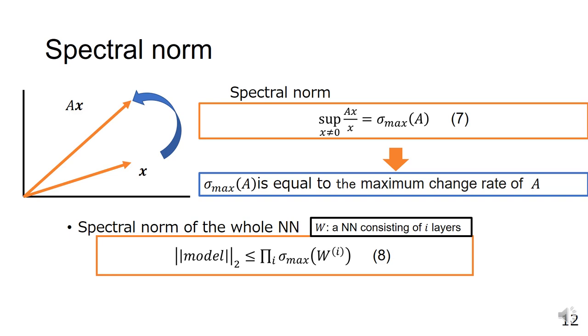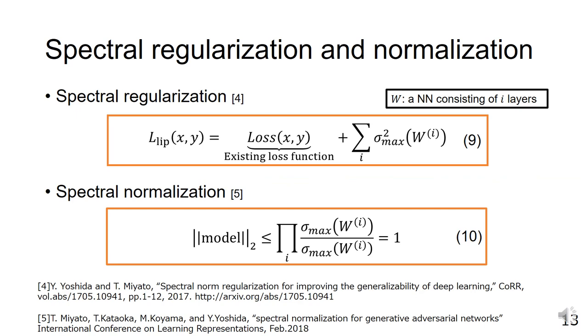The spectral norm of matrix A is σ_max(A). The spectral norm of a neural network is represented as the product of all the layers' maximum singular values. Spectral normalization and spectral regularization are stabilization methods that consider the spectral norm.